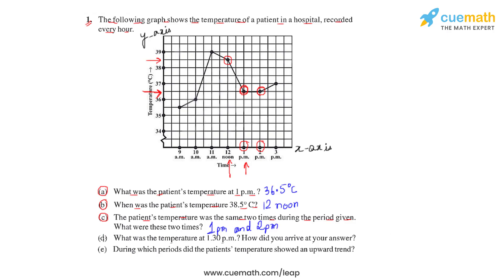Question d asks us to find the temperature at 1:30 pm. From the previous question, we saw that between 1 pm and 2 pm the temperature of the patient was 36.5 degrees Celsius. Since the temperature is constant during this hour, we can say that at 1:30 pm the temperature of the patient was also 36.5 degrees Celsius, as seen from the flat line segment in the graph.